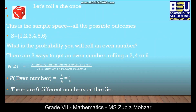Let's roll a die once. Can you tell me what is the possible number of outcomes you can get by rolling a die? Yes, there are six possible outcomes, and these form the sample space: {1, 2, 3, 4, 5, 6}. You can see that we can write it in the form of a set.